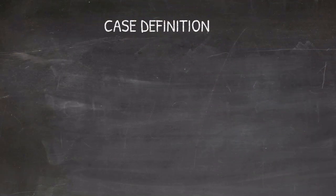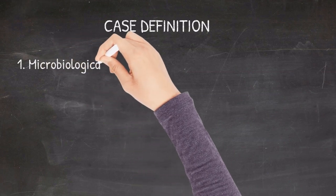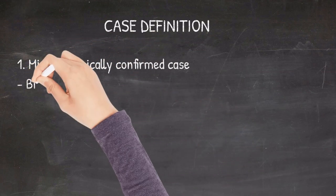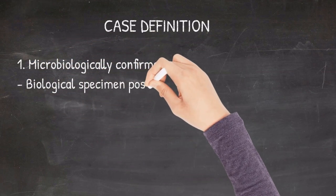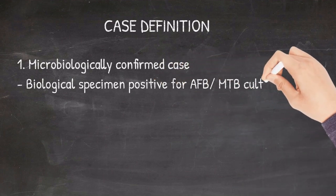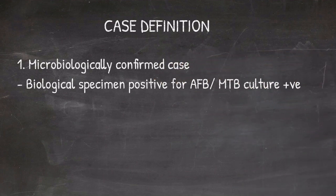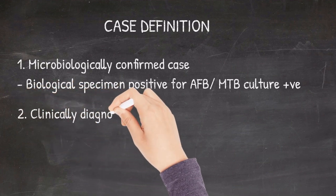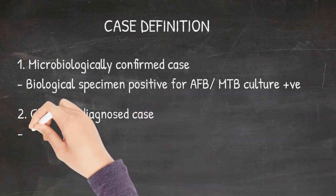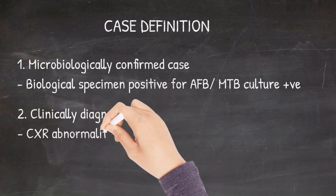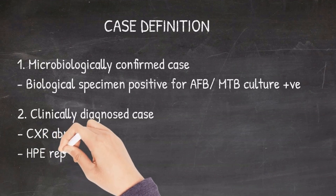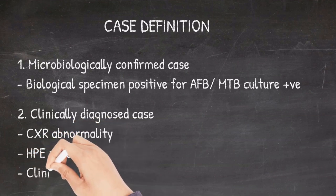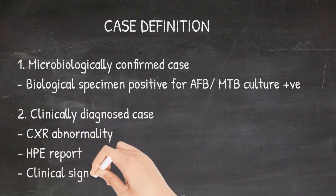Case definition of tuberculosis: It can be microbiologically confirmed, meaning the biological specimen is positive for acid-fast bacilli or it is culture positive. Clinically diagnosed tuberculosis when the biological specimen is not positive, but you have chest x-ray features which are suggestive of tuberculosis or the histopathology report is suggesting tuberculosis or based on clinical signs and symptoms.